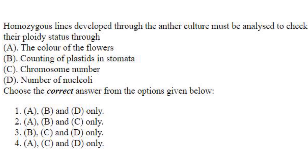Homozygous lines developed through anther culture can be analyzed to check their ploidy status. The color of flowers doesn't give any result on ploidy. Counting of plastids in stomata can give ploidy information, because chloroplast number in the guard cell is correlated with ploidy level: diploid has 8–12 chloroplasts per guard cell, tetraploid has 16–24, and haploid has 4–8 chloroplasts per guard cell. So the answer is option 3: B, C, D only.